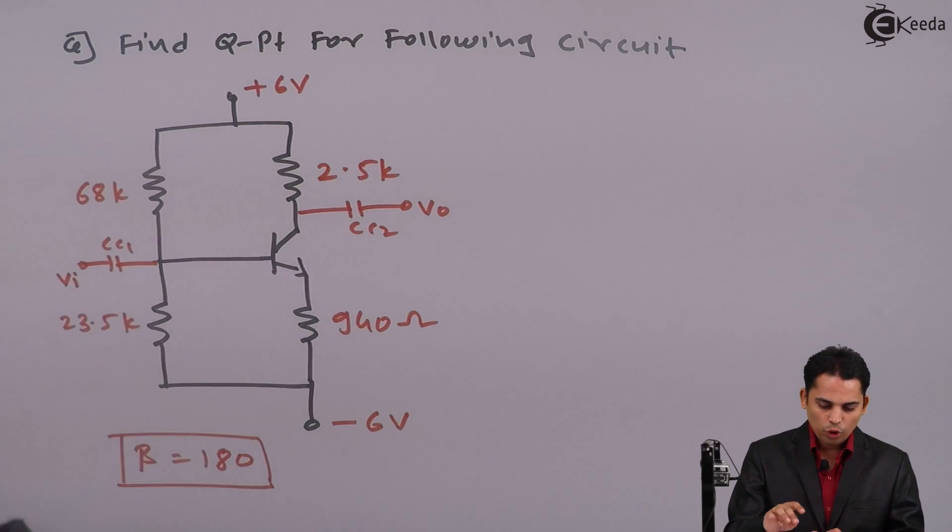So now in this particular case, before that what steps are you following? First step is always redraw the circuit diagram. Second step is to get base current IB. Step 3 is to get collector current IC and step 4 is to get VCE collector to emitter voltage. These are 4 different steps in order to find out Q point.